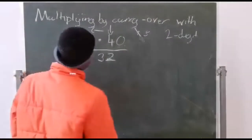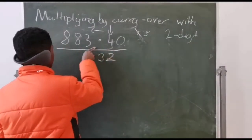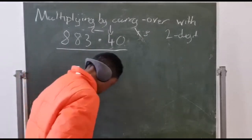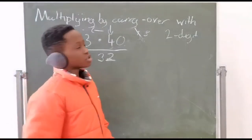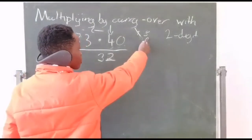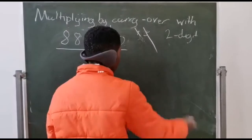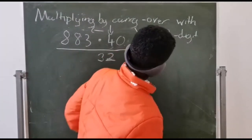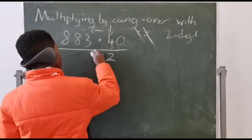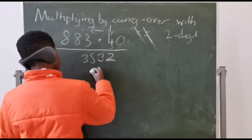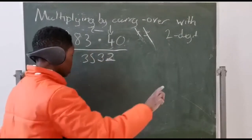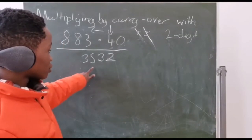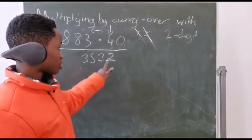So working through the digits: the answer for this row comes out as 3532. This here is the answer — three thousand, five hundred and thirty-two.